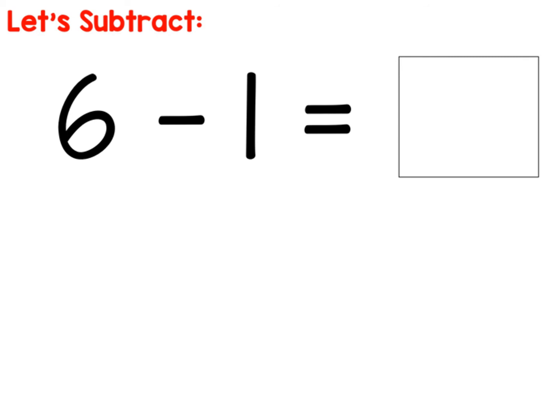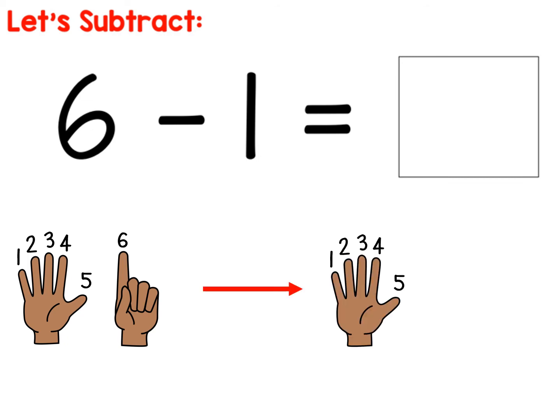All right, boys and girls. Now we're going to do six minus one. Go ahead and put up six fingers. You should have all of one hand and one more. Now take away one. That means put one down. How many do you have left? It should look like this, where you have all of one hand. And we know that on one hand we have five fingers. So six minus one is five.